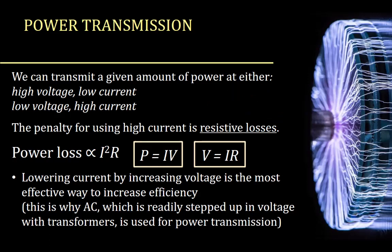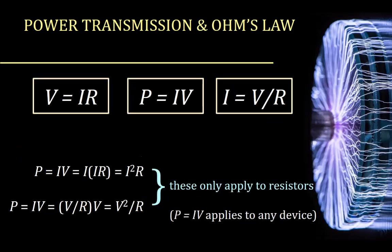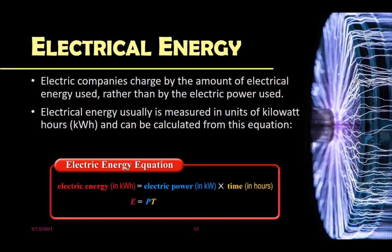Let's look at these equations again: V = IR, P = IV, I = V/R. We can also solve for current, substitute in, and get voltage squared over resistance. These apply to many different resistors and we can use them to calculate different values.